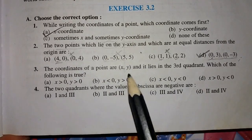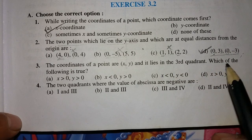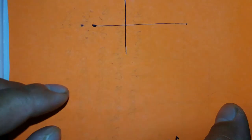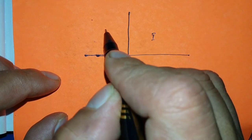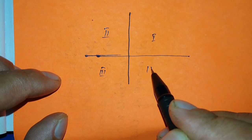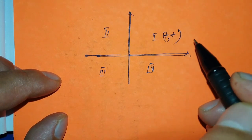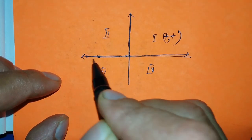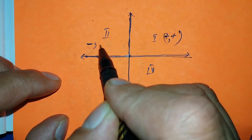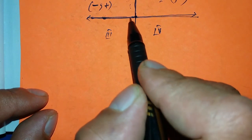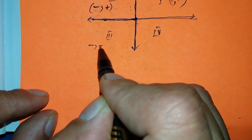Question 3: the coordinates of a point are (x, y) and it lies in the third quadrant. Which of the following is true? Let's recall the signs of each quadrant. First quadrant: x is positive, y is positive. Second quadrant: x is negative (left of origin), y is positive (above origin). Third quadrant: x is negative, y is negative (below origin).